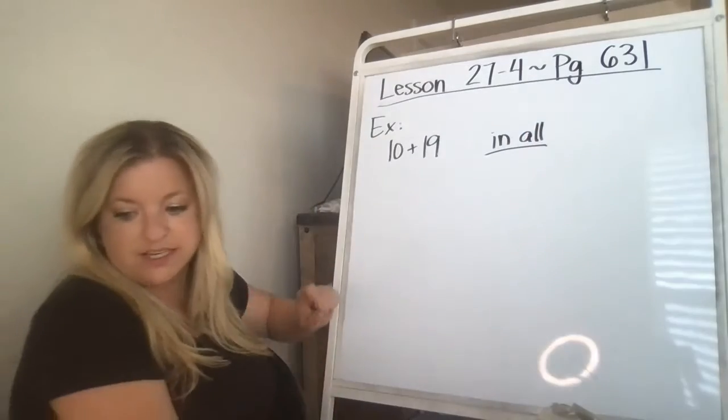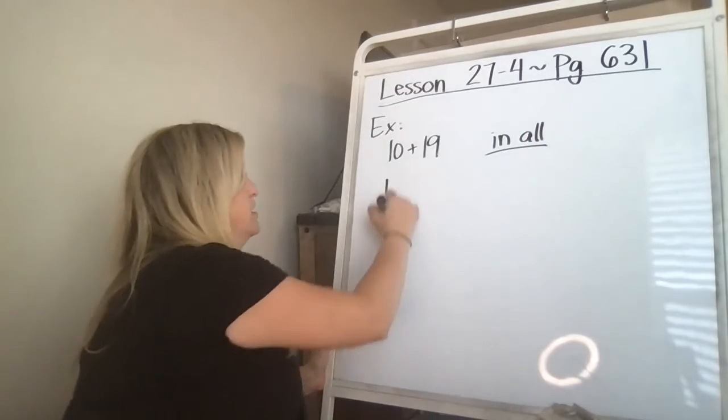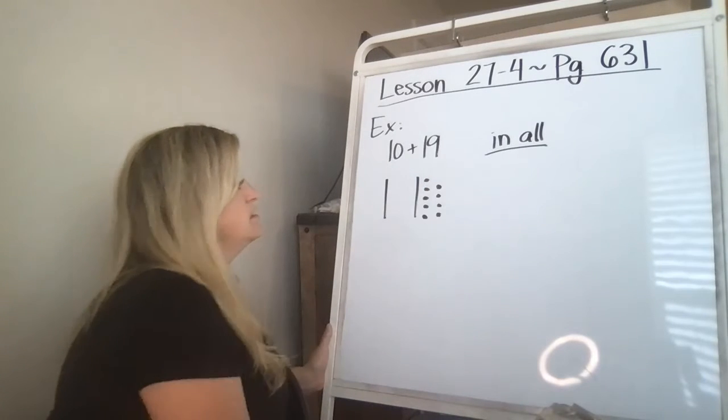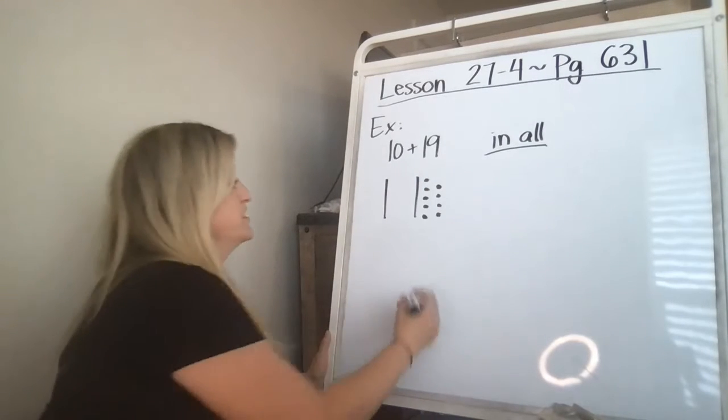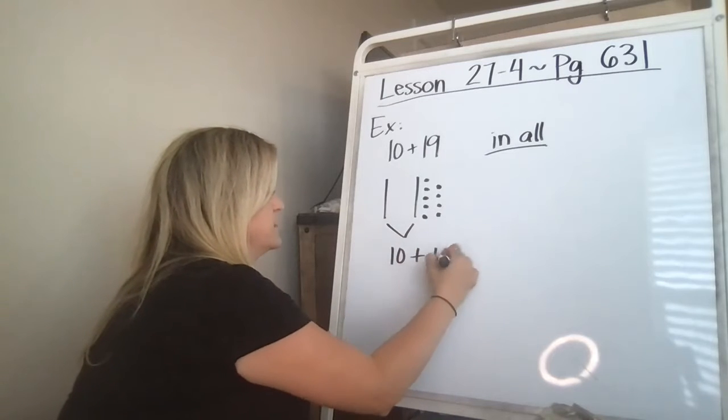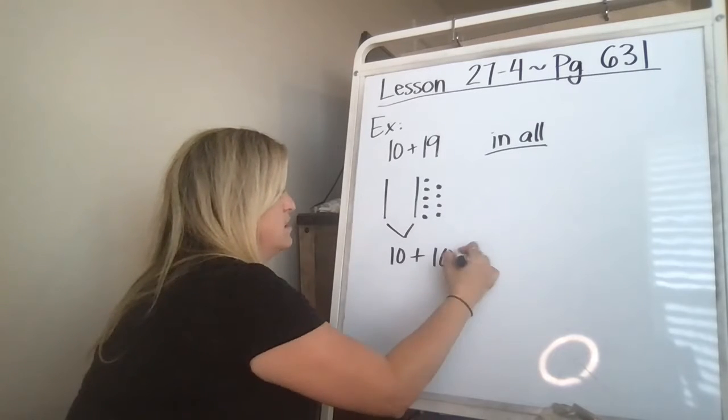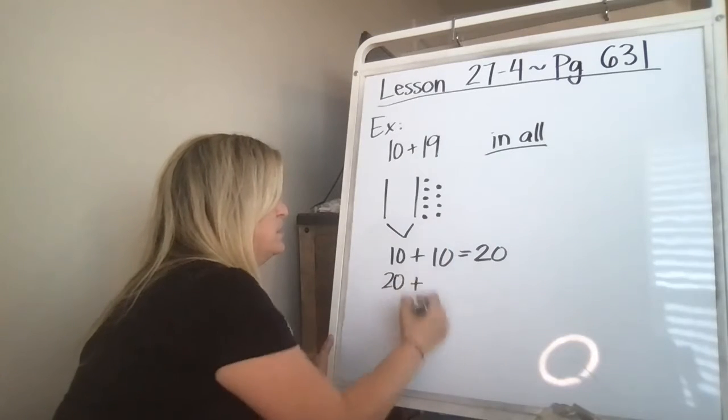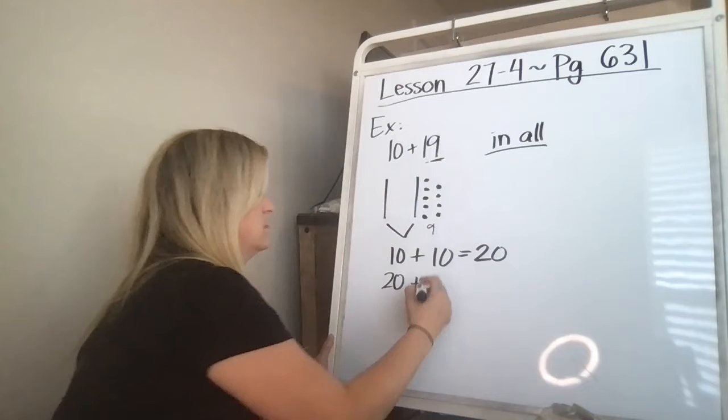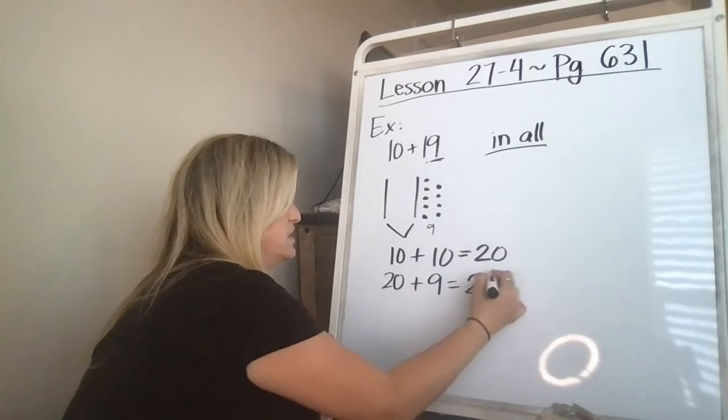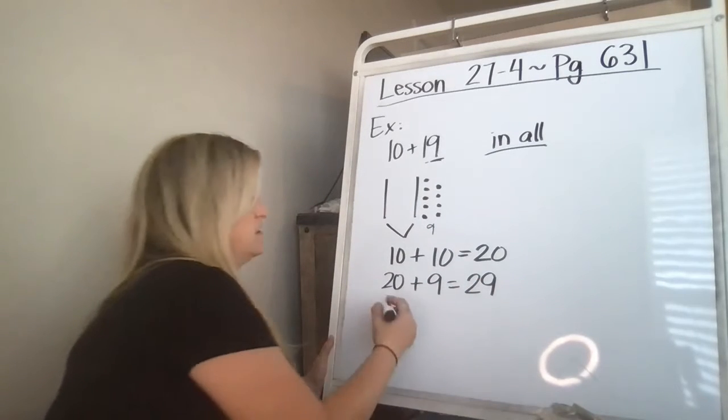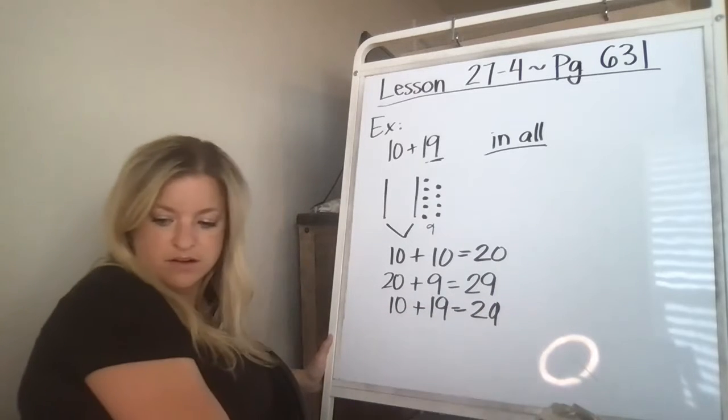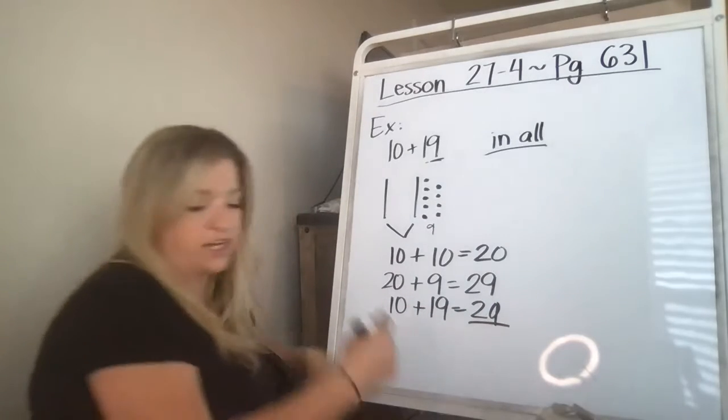So what they did is they drew a picture, 10 and then 18, 1 2 3 4 5 6 7 8 9. And they broke it down. They said 10 plus 10, look at that, I just did it right there, 10 plus 10 equals 20. Then it says 20 plus those ones left over which we know are 9 is 29, and then that must mean that 10 plus 19 is also 29, and there are 29 marbles.